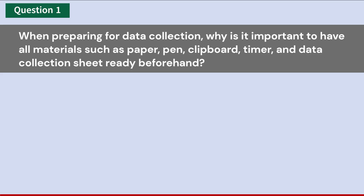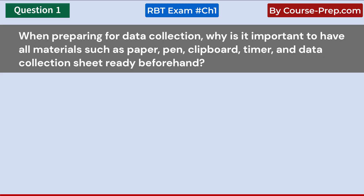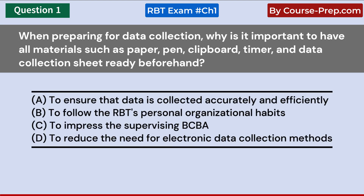When preparing for data collection, why is it important to have all materials such as paper, pen, clipboard, timer, and data collection sheet ready beforehand? A. To ensure that data is collected accurately and efficiently. B. To follow the RBT's personal organizational habits. C. To impress the supervising BCBA. D. To reduce the need for electronic data collection methods. Answer A: To ensure that data is collected accurately and efficiently.